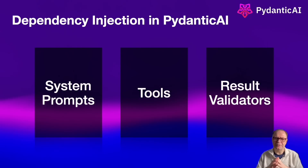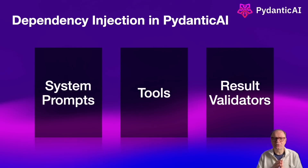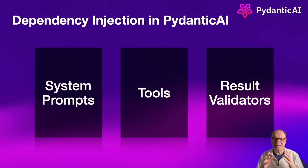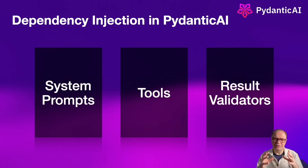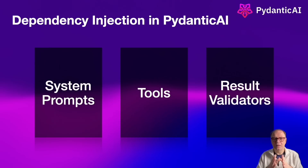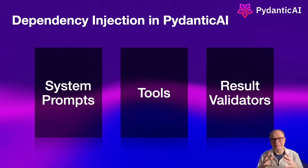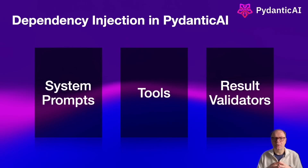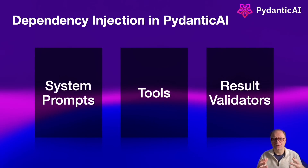DI in Pydantic AI uses some of the best practices from software engineering to make dependencies type-safe, understandable, easy to test, and ultimately easier to deploy in production. Remember, it's one thing to design an agentic system that works on your laptop — it's a completely different story to work in a team environment and deploy into production and maintain a large agentic system. All of these require levels of magnitude of architectural design, and dependency injection plays a critical role when designing larger systems.